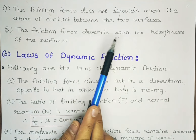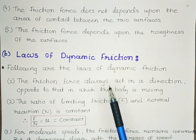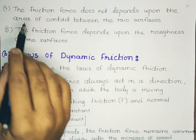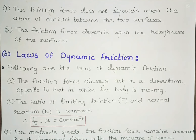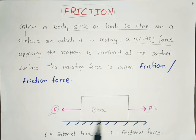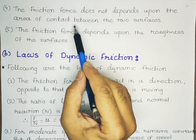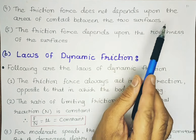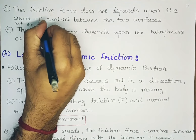The fourth law states the friction force does not depend upon the area of the contact surface, but it depends on the roughness of the surface. For example, considering a box, the area which the box covers does not matter, but how rough the surface is does matter. So the friction force does not depend upon the area of contact between the two surfaces, but it depends on the roughness of the surface.